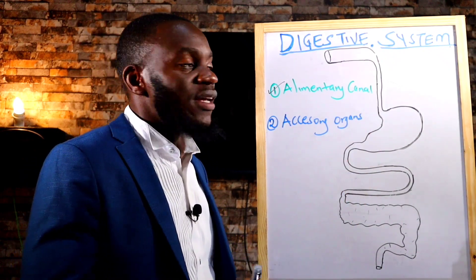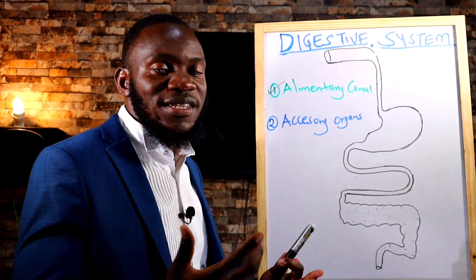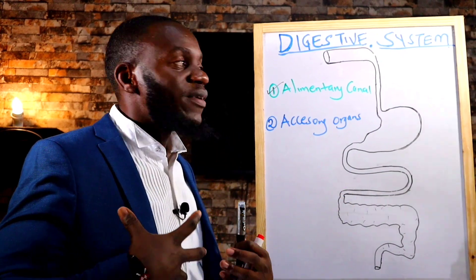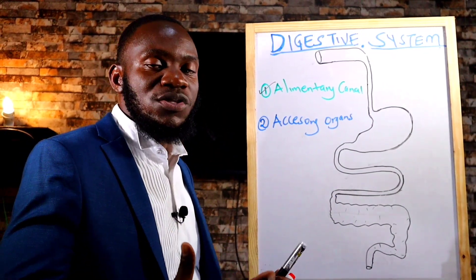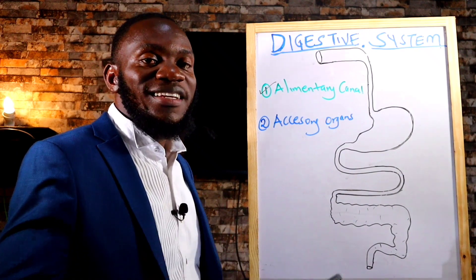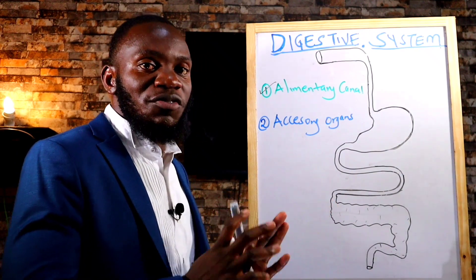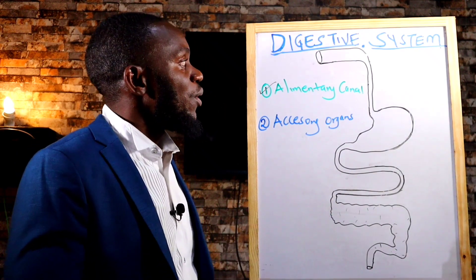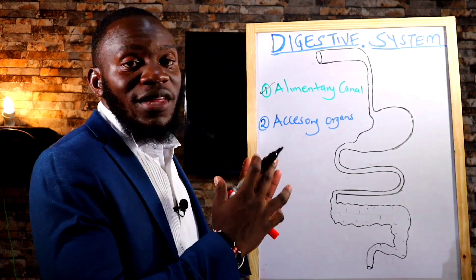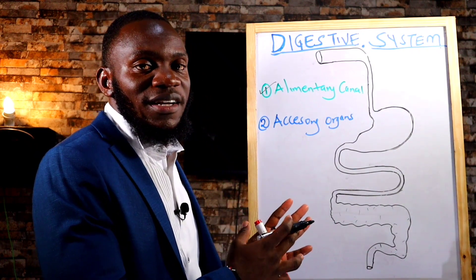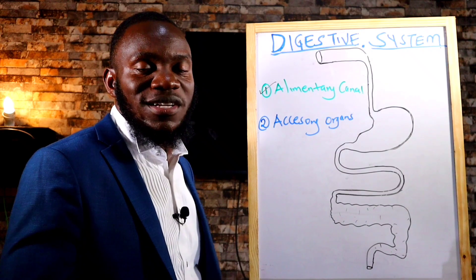The accessory organs join the alimentary canal through tubes or ducts, and their input is through secretions of enzymes that aid in digestion and breakdown of food particles. We will start with the alimentary canal as we head towards the accessory organs, and then finally the functions of the digestive system.